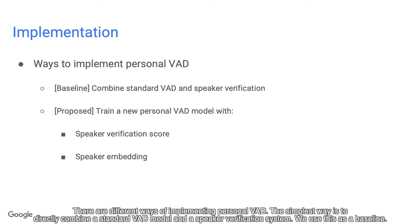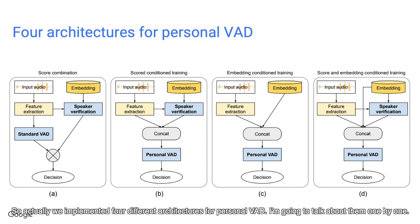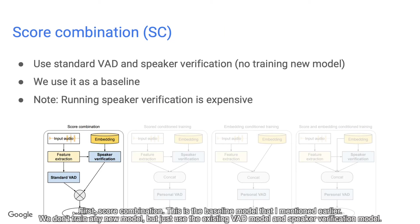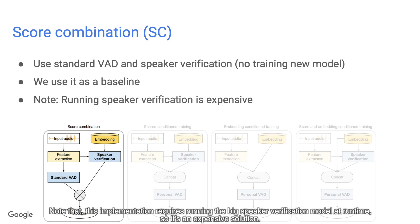There are different ways of implementing Personal VAD. The simplest way is to directly combine a standard VAD model and a speaker verification system — we use this as a baseline. But in this paper, we propose training a new Personal VAD model which takes the speaker verification score or the speaker embedding as input. We implemented four different architectures. The first is score combination: the baseline model. We don't train any new model, but use the existing VAD model and speaker verification model. If the VAD output is speech, we verify this frame against the target speaker, giving us three output classes. Note that this requires running the big speaker verification model at runtime, so it's an expensive solution.